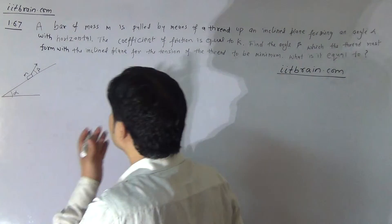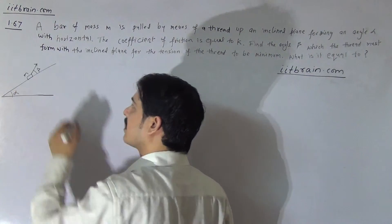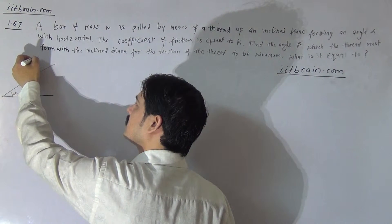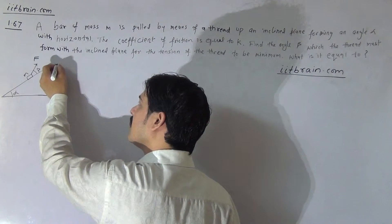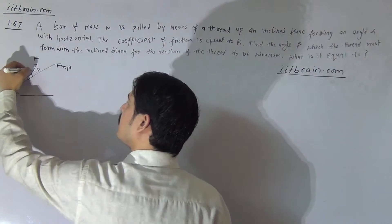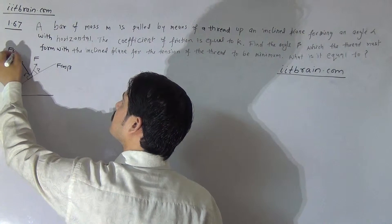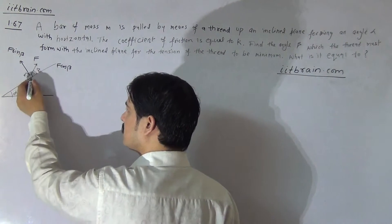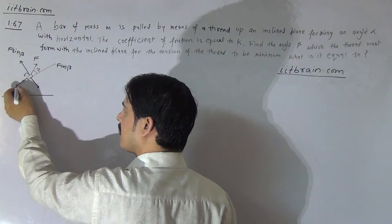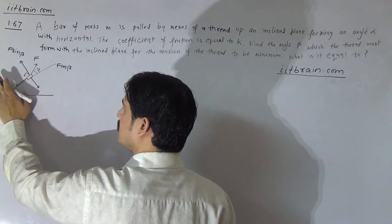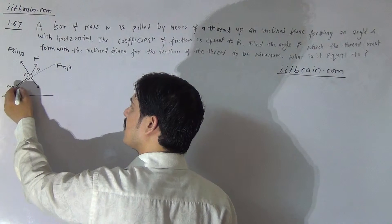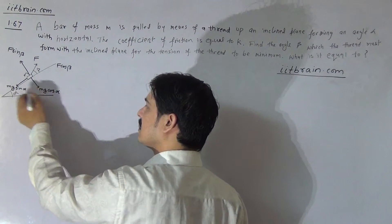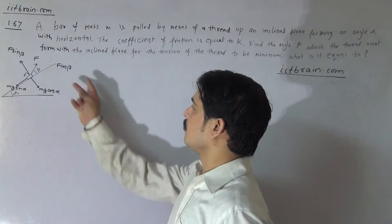As the diagram shows, let us consider that the force exerted by this thread is F. Its component along the incline will be F cos beta, and perpendicular to the incline this will be F sin beta. The weight of the body is mg, and its components perpendicular and parallel to the incline are mg sin alpha and mg cos alpha.